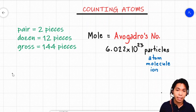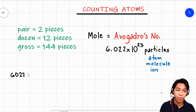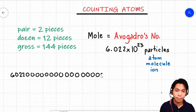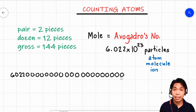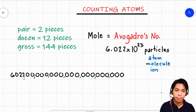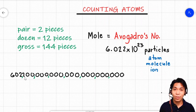We write 6, 0, 2, 2, then add 20 zeros. And then let's add all the commas. And that is what one mole is equal to.